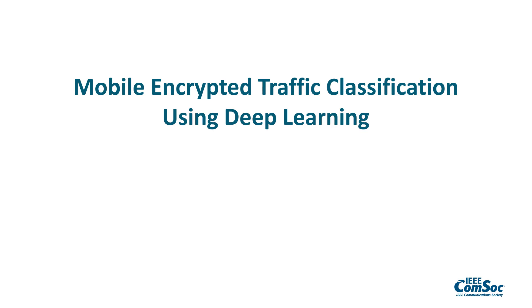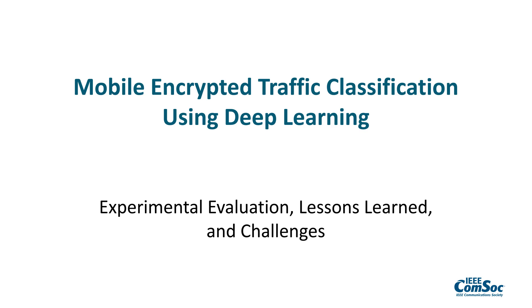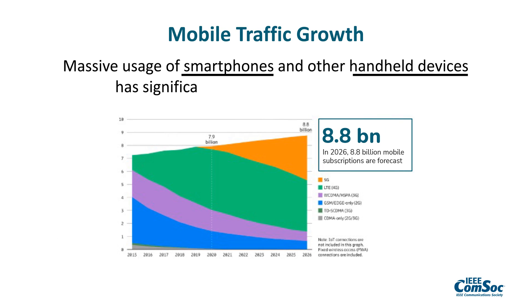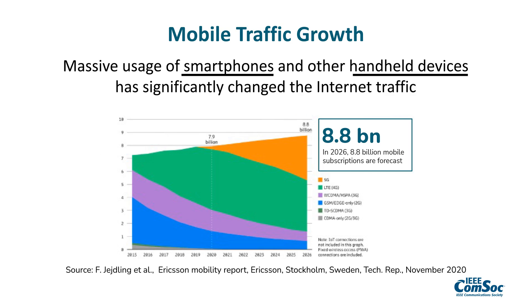Hello, today I'm going to present our experience with deep learning for mobile and encrypted traffic classification. The massive usage of smartphones and other handheld devices has significantly changed the way in which we communicate and thus the nature of internet traffic. As shown in the image, by 2026, 8.8 billion mobile subscriptions are forecast, most of which will be 4G or 5G.